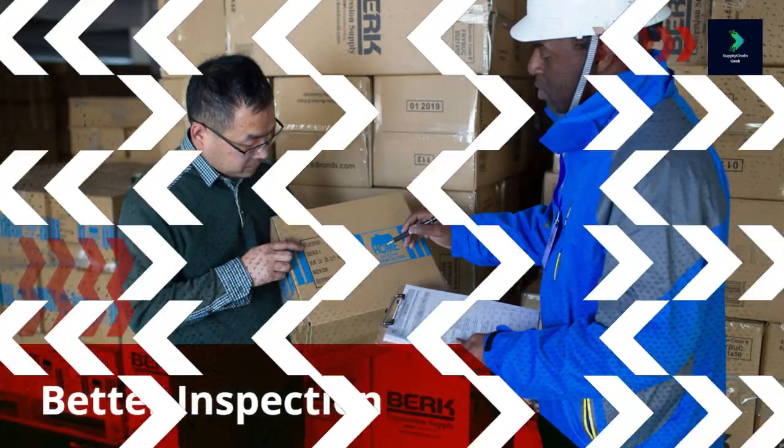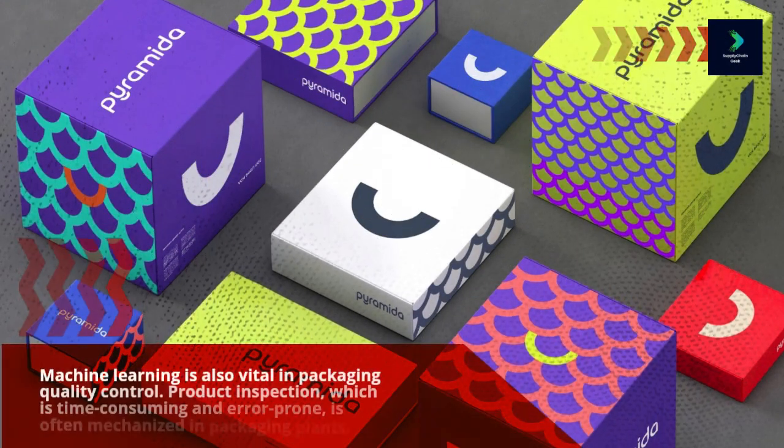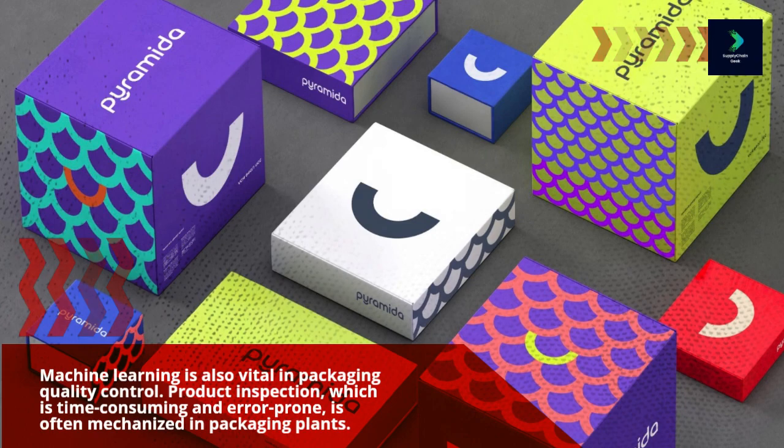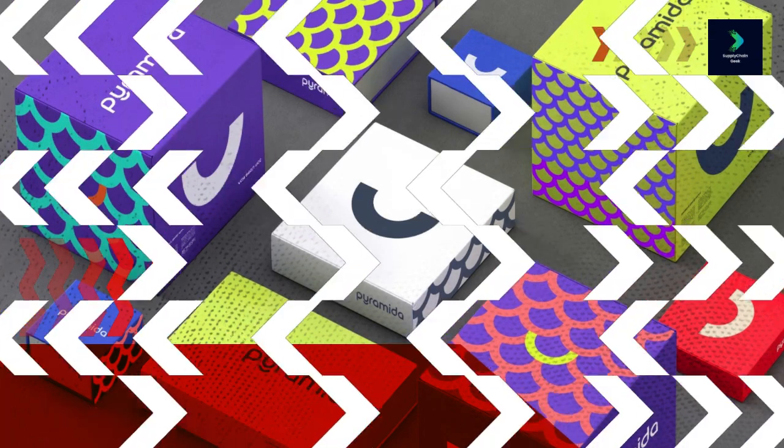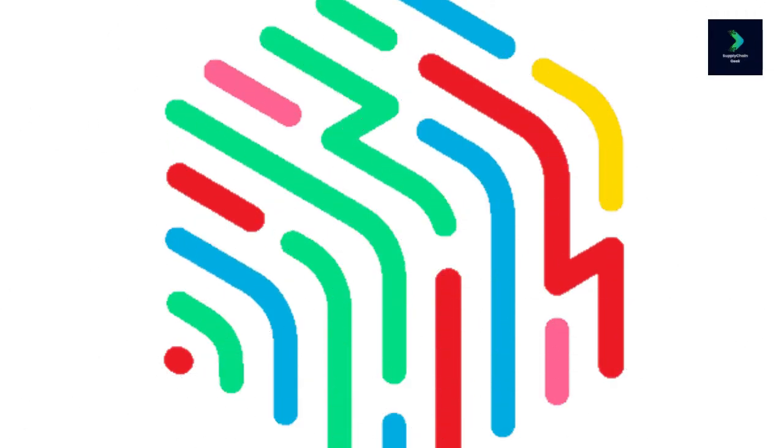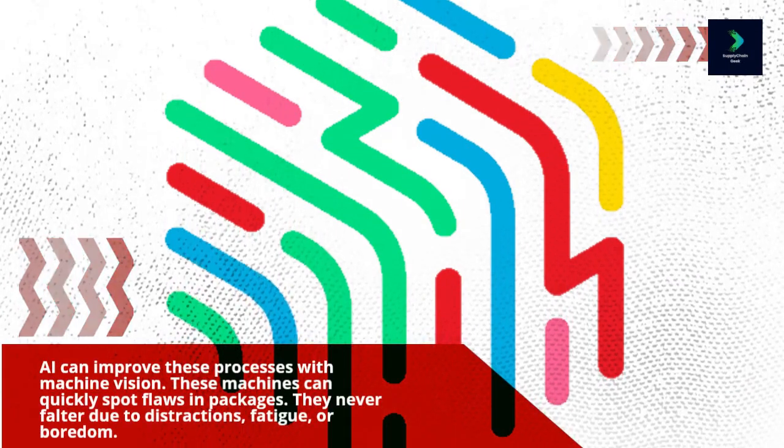Better inspection. Machine learning is also vital in packaging quality control. Product inspection, which is time-consuming and error-prone, is often mechanized in packaging plants. AI can improve these processes with machine vision. These machines can quickly spot flaws in packages.